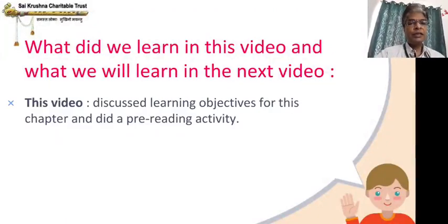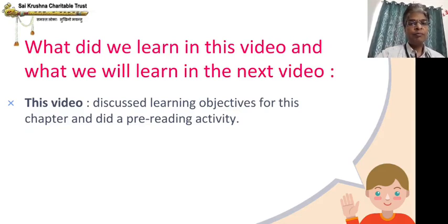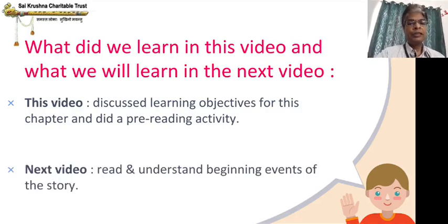So in this video, we discussed learning objectives. I hope all of you are able to differentiate and understand what is knowledge, what is skill, and what is value. We discussed what we are going to read and learn from this chapter, and did a pre-reading activity about how pet animals are taken care of or how animals are used for work. In the next video, we are going to understand the beginning events of the story — we will divide the story into beginning, middle, and end.